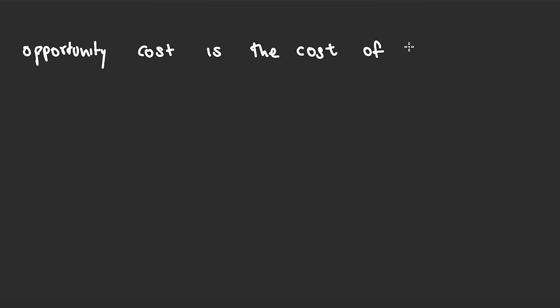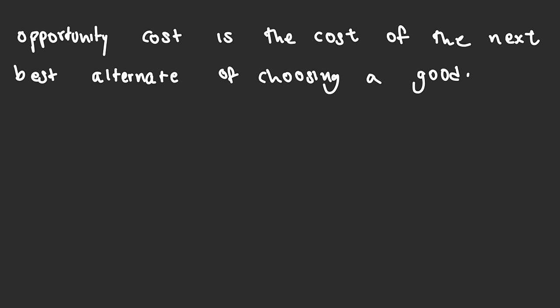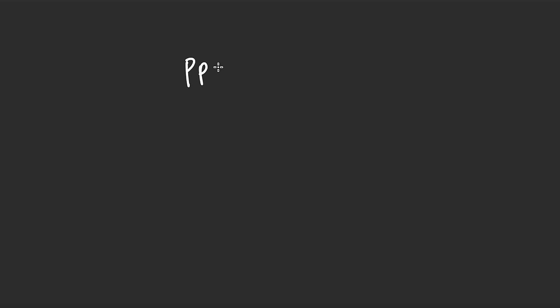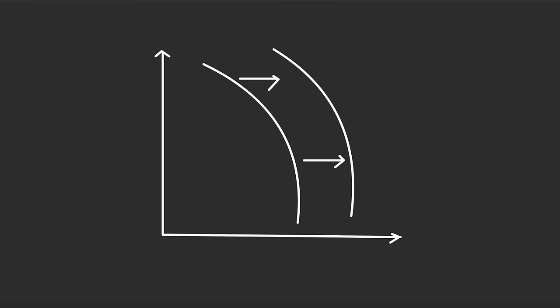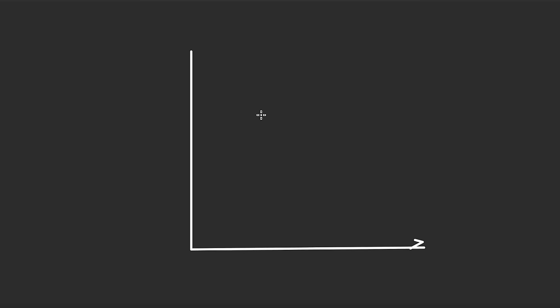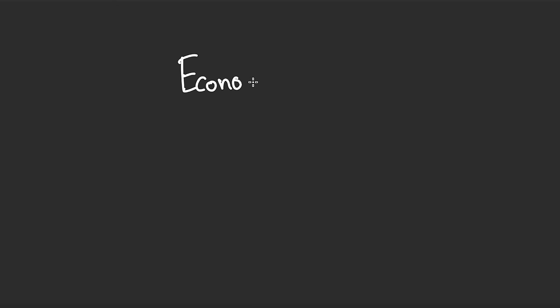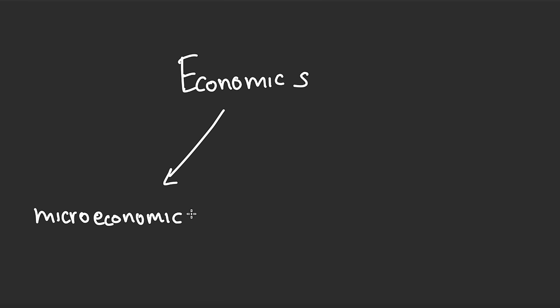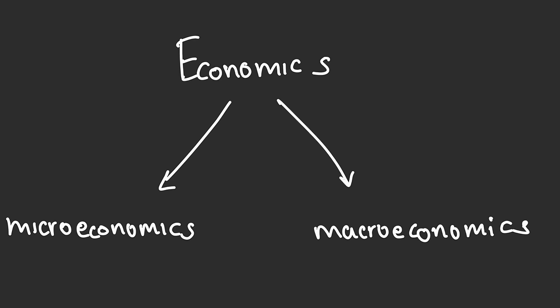Opportunity cost is the cost of the next best alternative when choosing a good. You can represent opportunity cost with a production possibility curve (PPC). If a point is inside the curve it is inefficient; if it is outside, it is unattainable. An outward shift means you have discovered raw materials, new technology, or an increase in the labor force. An inward shift means there are natural disasters, very low investment in technologies, or running out of resources.